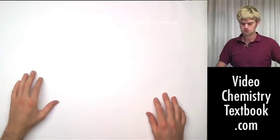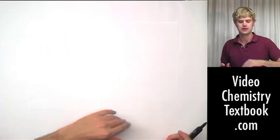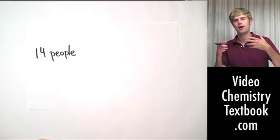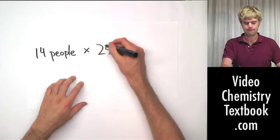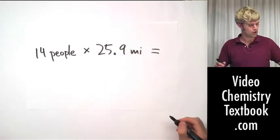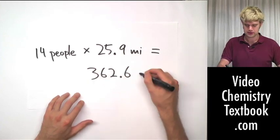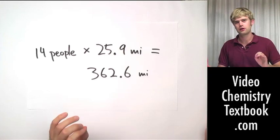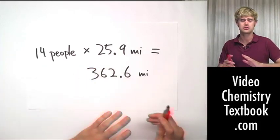Here's another example. Let's say that this person we talked about earlier is part of a running group and they all run together on the same days and they do the exact same runs. Let's say that there are 14 people in this running group and they want to find out how far they all ran as a group. So we're going to do 14 people and multiply it by the distance that one of them has gone, which is 25.9 miles. When I do this math, I'm going to get 362.6 miles total for the whole group.